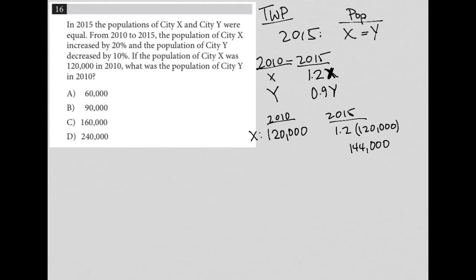Remember from the very start we were told that in 2015 the populations for X and Y were equal to each other. So for city Y in 2015, the population is also 144,000. Now, what are we asked to find? If the population of city X was 120,000 in 2010, what was the population of city Y in 2010?